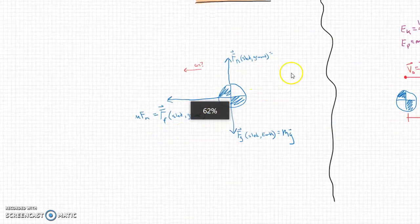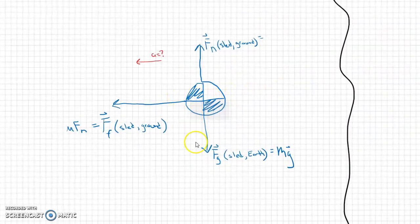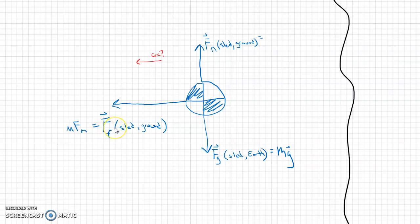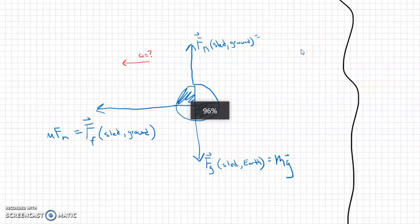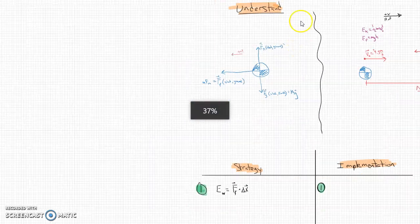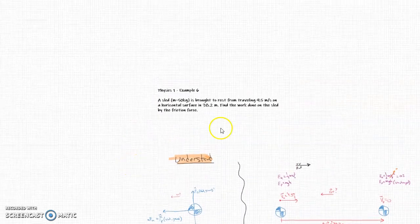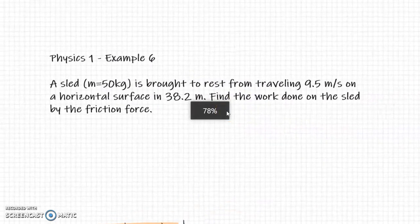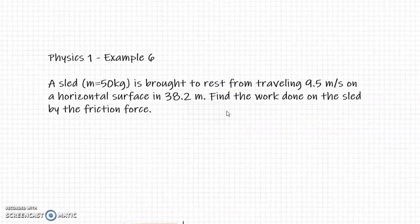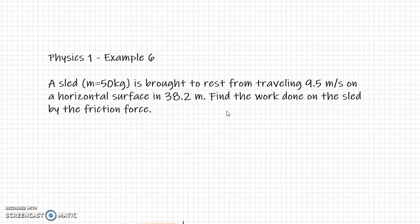So we do have here this sled. We do know that it travels 38.2 meters. We also know that the force of friction is what's doing the work, and we're going to need to know mu times fn. Now, going back to the problem, there's going to be a little bit of a problem here. If we go back to our original statement, we don't have a coefficient of friction. There is no coefficient of friction given in this problem.